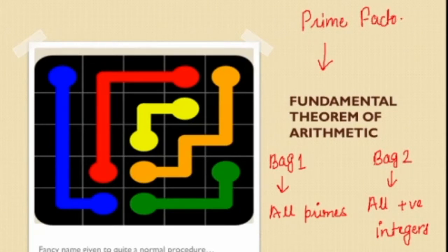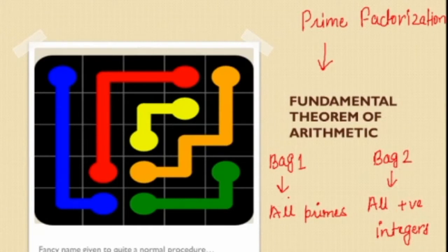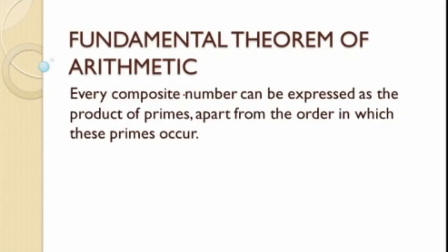You've been doing prime factorization since Class 4 or 5. The answer to the question is: there does not exist any number in Bag 2 that cannot be written as the product of numbers in Bag 1. This is the Fundamental Theorem of Arithmetic — it says that every composite number can be expressed as the product of primes.